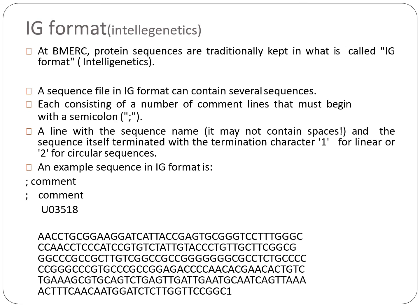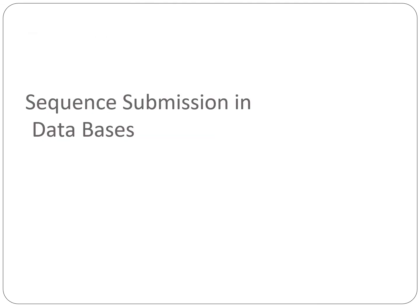A sequence file in IG format can contain several sequences, each consisting of a number of comment lines that must begin with a semicolon. After putting a semicolon you can add your comment. Aligned with the sequence name, it may not contain species. The sequence itself is terminated with a termination character: one for linear sequences or two for circular sequences.